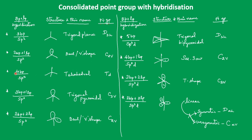If four bond pairs are there, the hybridization is SP3 and the base structure is tetrahedral. In this, if one lone pair is there, the hybridization won't change — only the structure will change according to the presence of the lone pair. If you add one lone pair to the tetrahedral structure, the structure changes to trigonal pyramidal, and the point group is C3V. The point group varies according to the structure, not because of the hybridization.